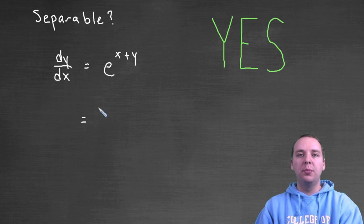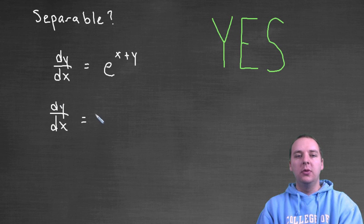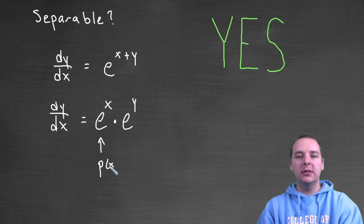Just using a basic property of exponents - e to the a plus b is equivalent to e to the a times e to the b. And so we could rewrite this as dy/dx equals e to the x times e to the y, where this is a function of x and this is a function of y, and so we did it.